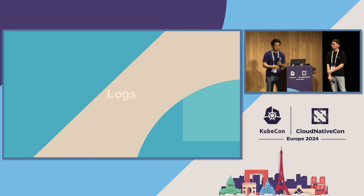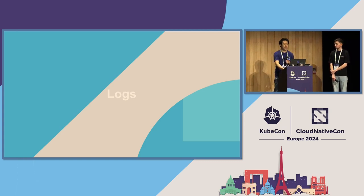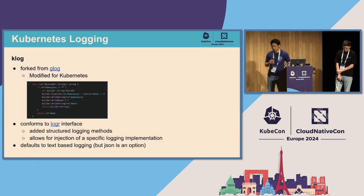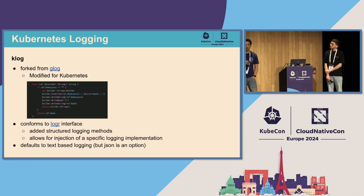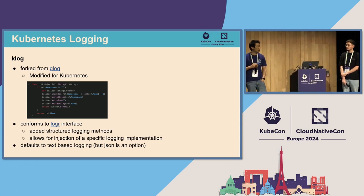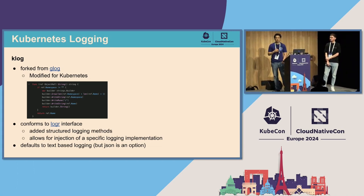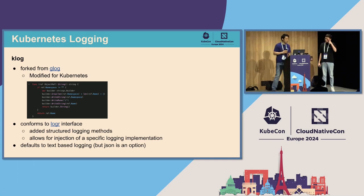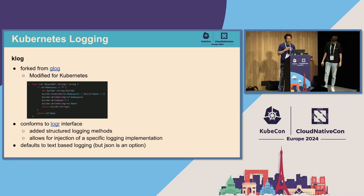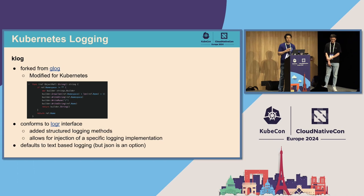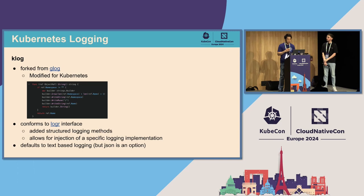First, I'm going to start with logs. Logs are the most granular piece of data that you're going to have in your Kubernetes cluster. When you are debugging an issue, the pinpointed stuff that you are looking at is generally going to be derived from logs. Internally, how this works is we have this thing called Klog. It is forked from a library called Glog and is modified specifically for Kubernetes. We understand the basic structure of Kubernetes objects so that we can print them out in various logs. It conforms to the logger interface, which is a generic interface that allows you to inject logging implementations. This has allowed us to do structured logging upstream.